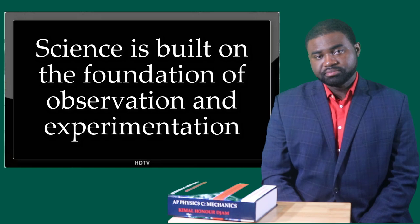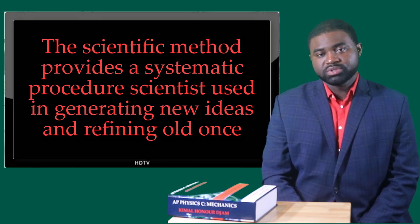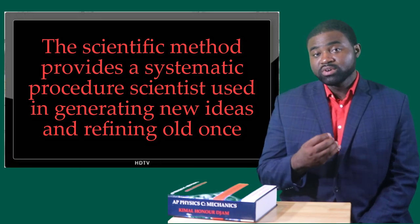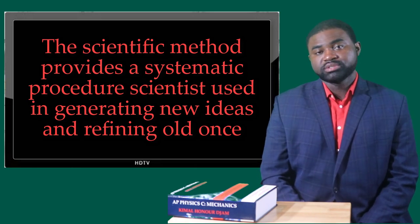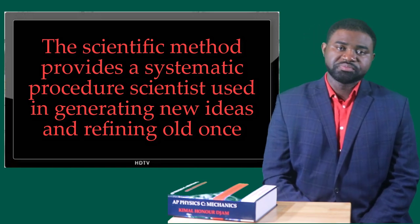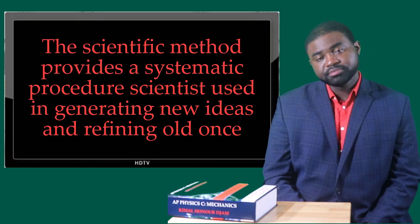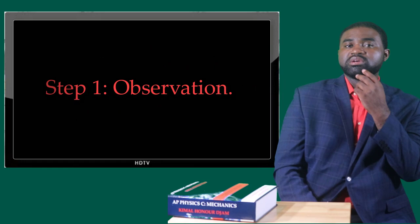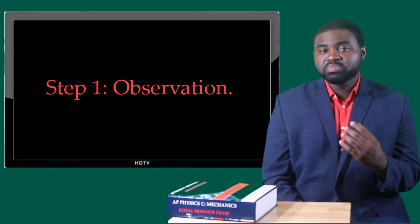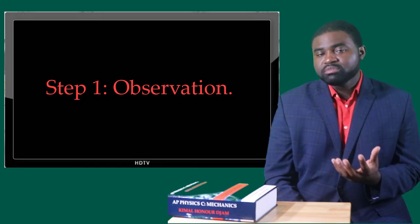The scientific method provides a systematic procedure used by scientists in generating new ideas and refining old ones. The process begins with observations of the world around us. This initial observation is what we call an observational experiment. What you need to understand is that this observational experiment may be planned or unplanned. Or sometimes preliminary data is collected. It may not even be collected at all.